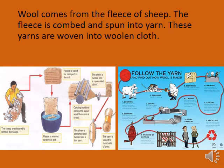Next, wool. Wool comes from the fleece of sheep. The fleece is combed and spun into yarn. These yarns are woven into woollen clothes. Wool is manufactured by processing the hair of sheep. The hairy skin of a sheep has two types of fibers — the coarse and the fine — of which the finer one is used to make wool.